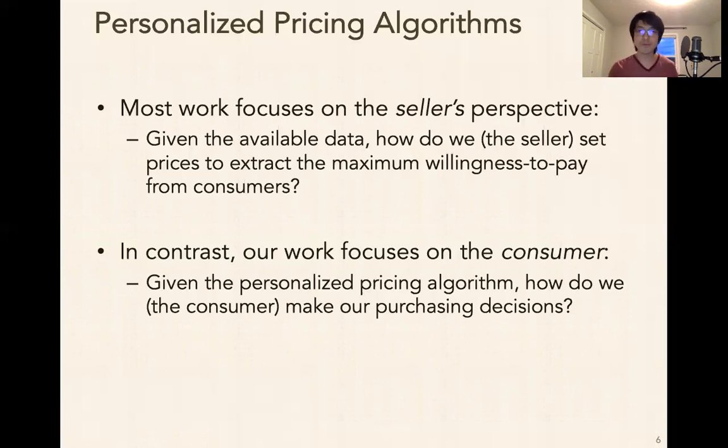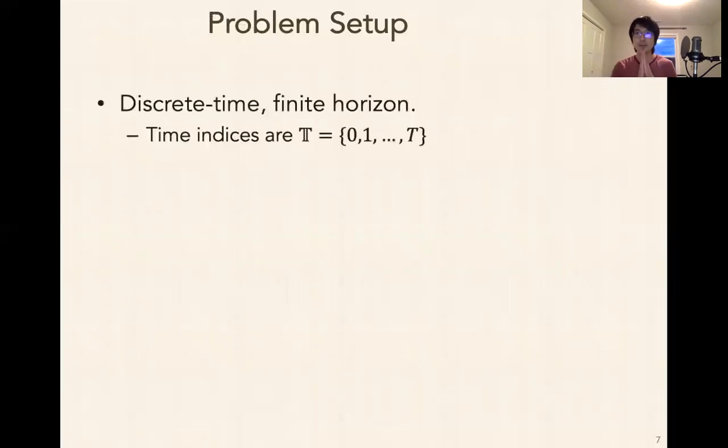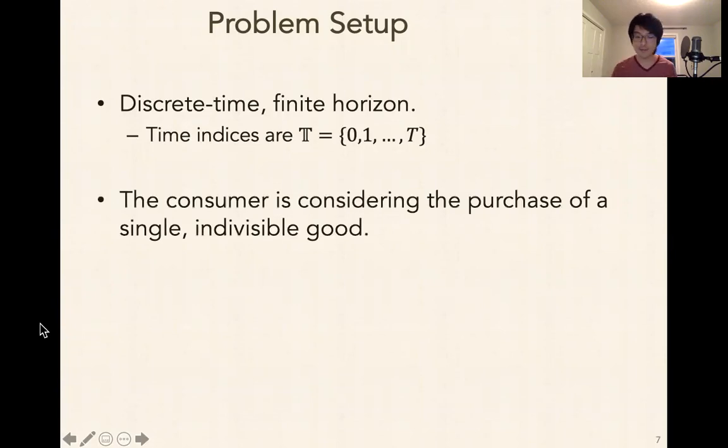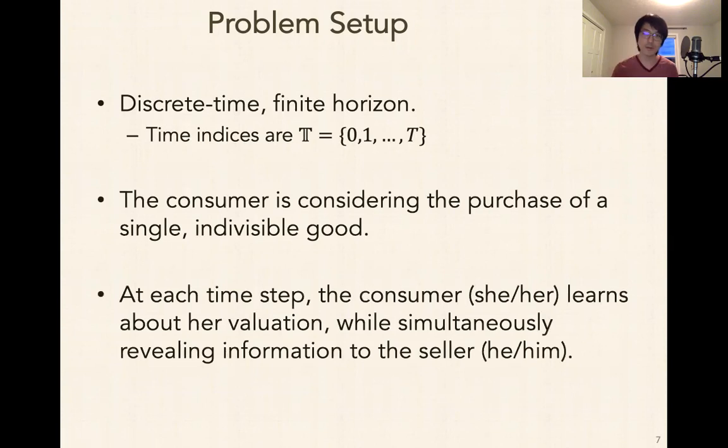So what should the consumer do? With that, I'm going to go ahead and start talking about the problem setup. We consider discrete time finite horizon setting. Time indices are blackboard T, goes from zero to capital T. The consumer is considering the purchase of a single indivisible good. And at each time step, the consumer learns about her valuation while simultaneously revealing information to the seller. And just to make it easier to talk about, I'm going to use she, her pronouns for the consumer and he, him pronouns for the seller.